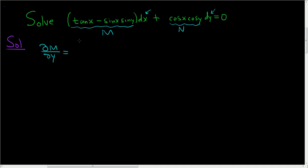So del M del Y, well, the derivative of tangent in that case would be zero. This guy hangs out, so we get negative sine X, and the derivative of sine would be simply cosine Y.